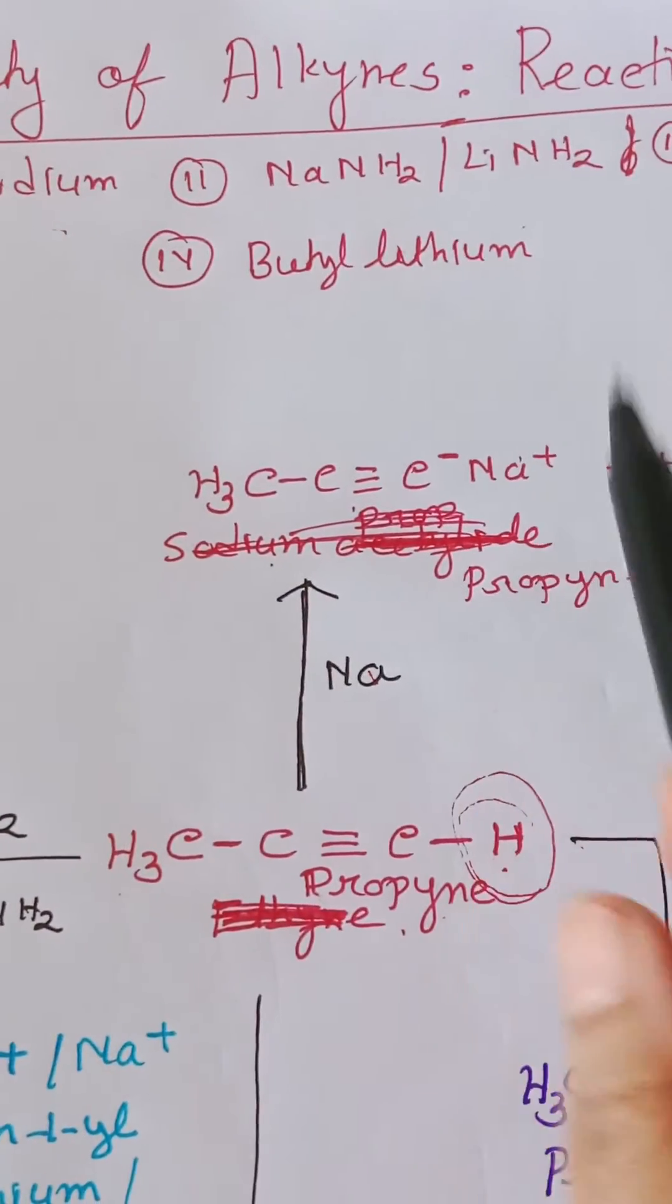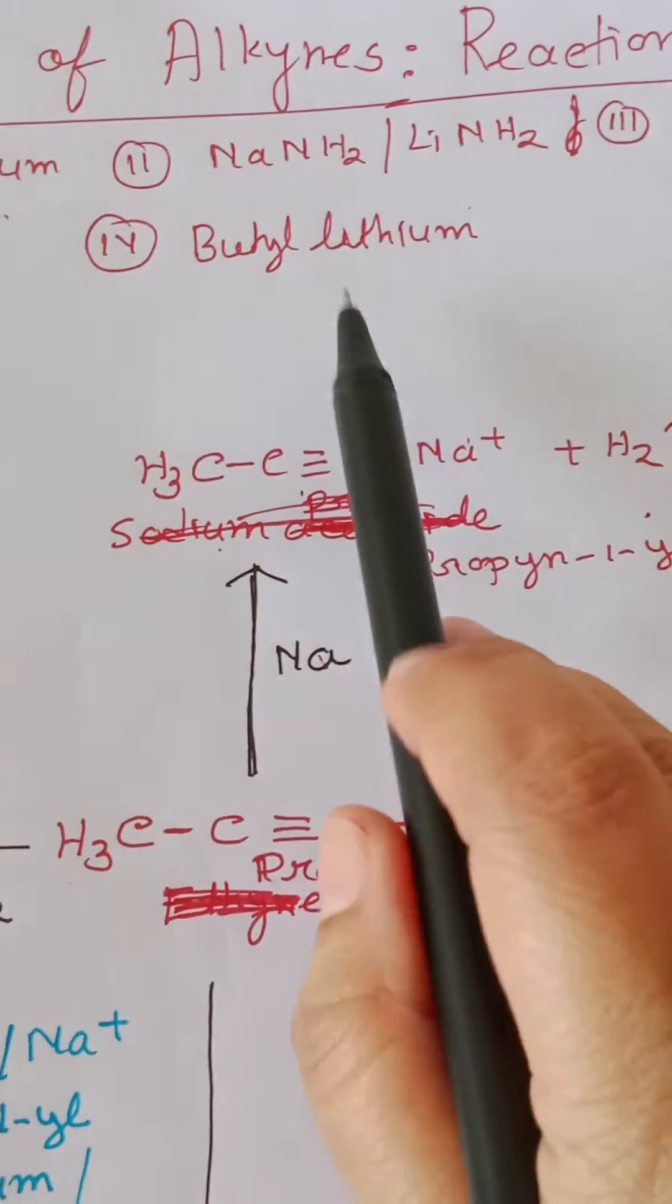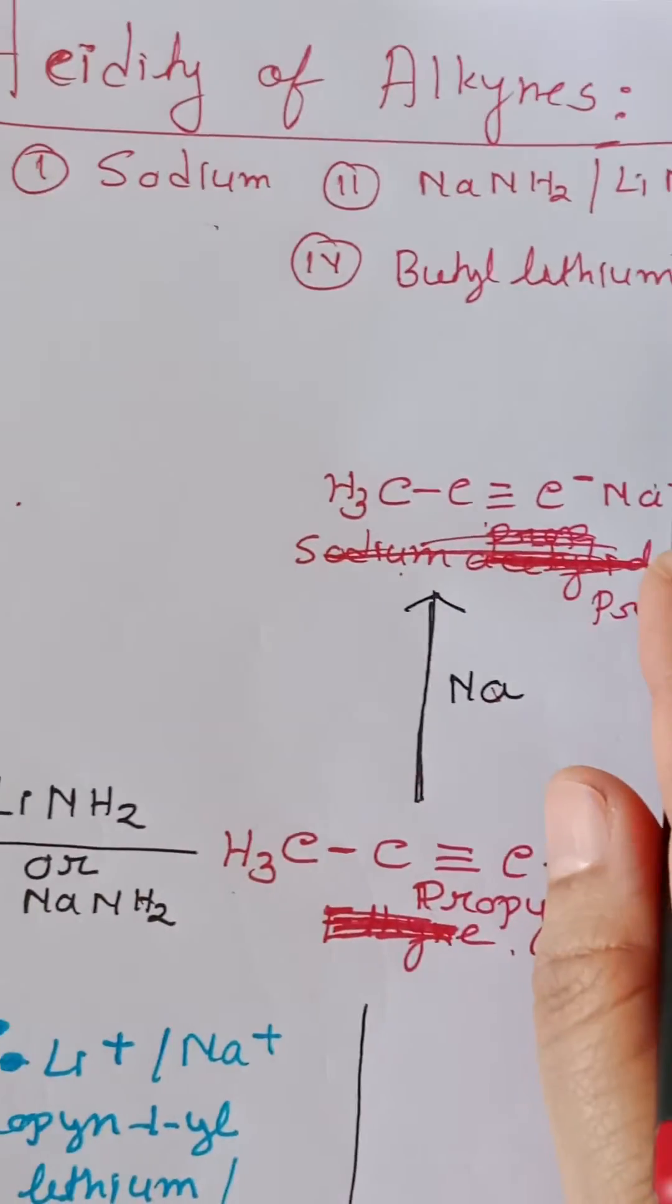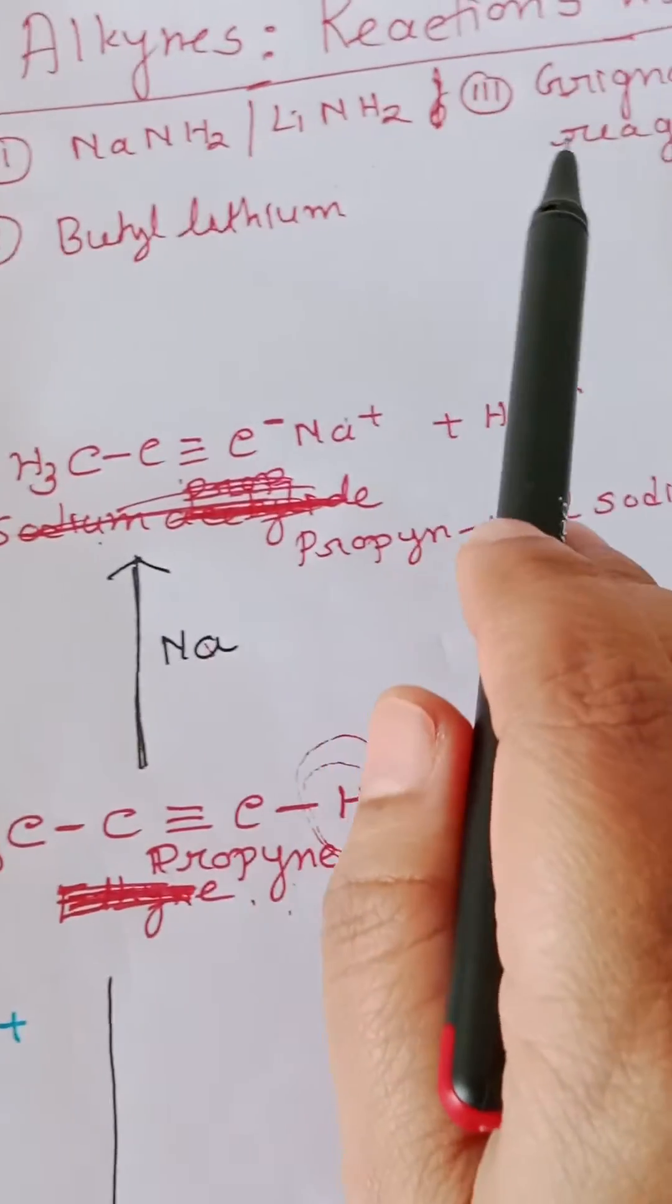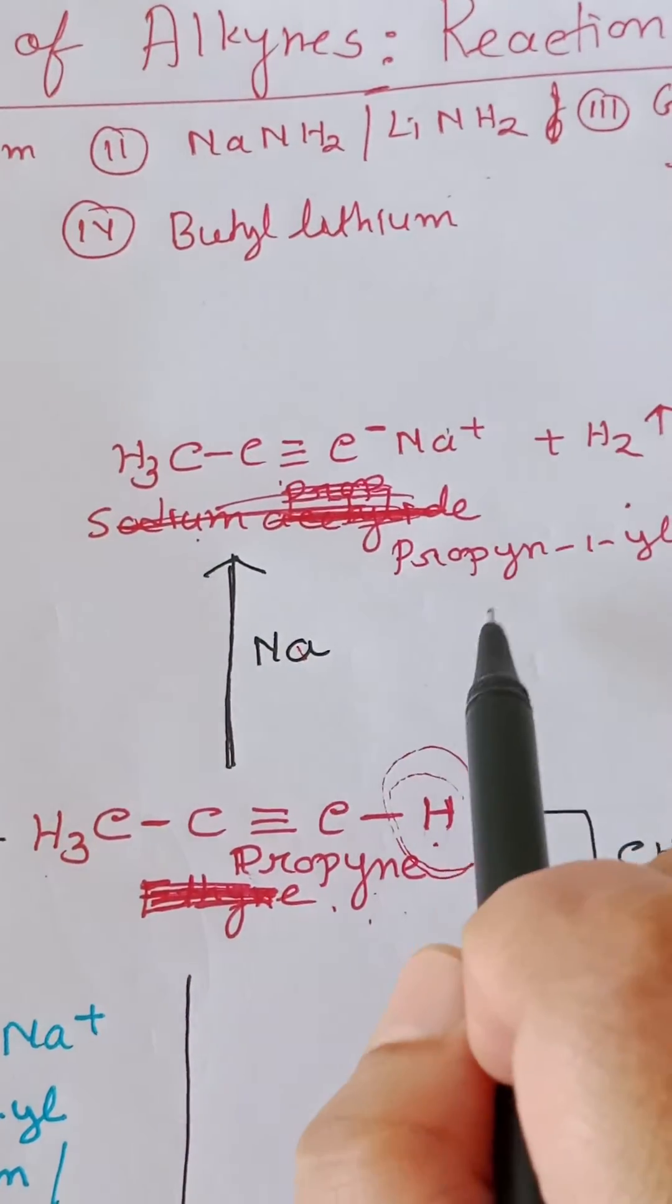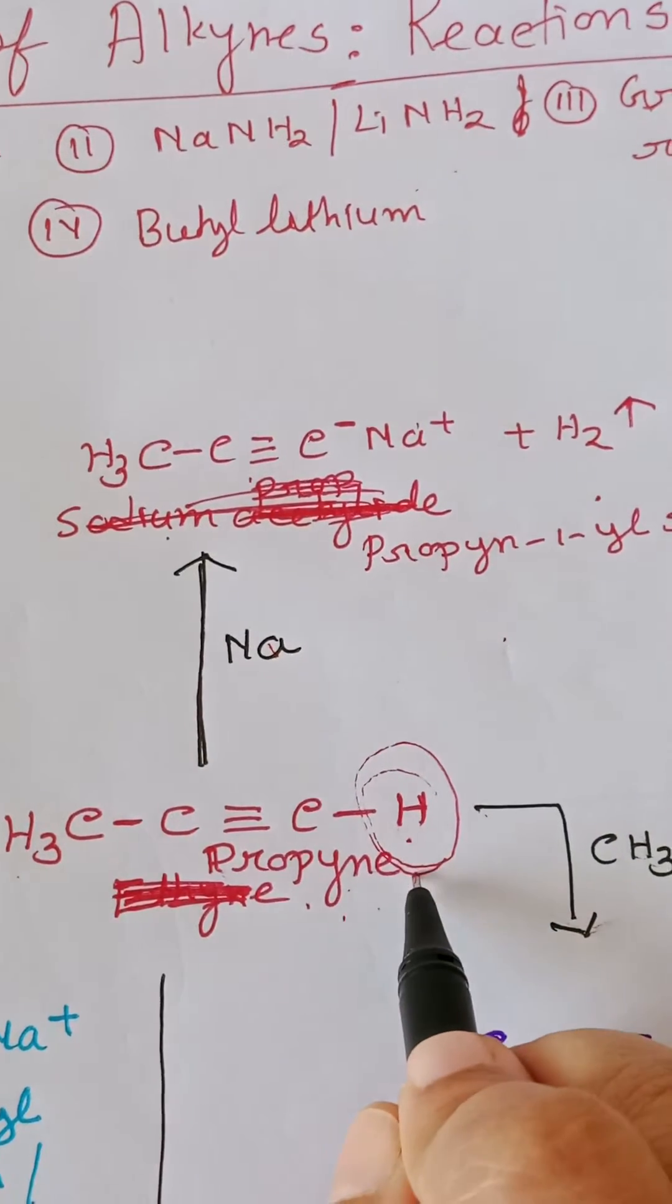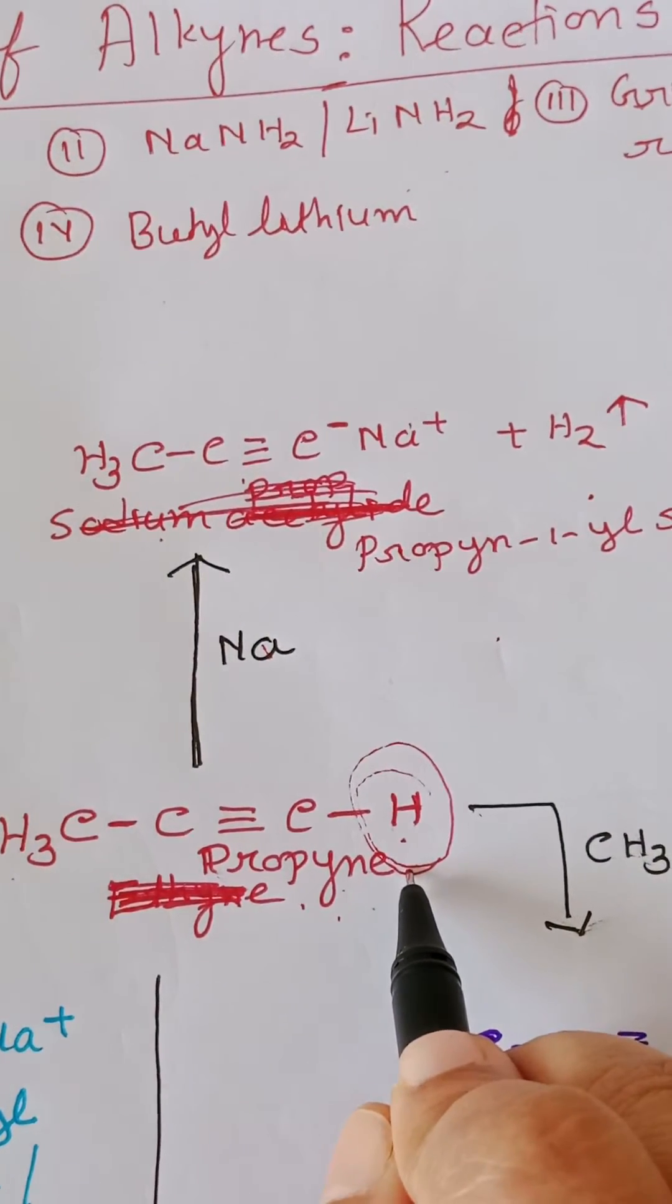Here I am going to explain some reactions of alkyne molecules using sodamide or lithium amide, sodium, Grignard reagent, and butyl lithium. This reaction also proves that alkyne terminal hydrogen is acidic in nature.